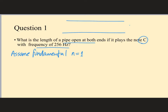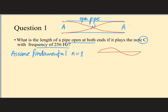If n equals 1 in our open pipe, that means I have a displacement antinode at each end and one node in between, so the displacement wave kind of has this shape. One wavelength goes from node to antinode to node to antinode to node. So from antinode to antinode — which is what I have here — is one half of a wave. Therefore, the length of the pipe is one half of a wavelength.